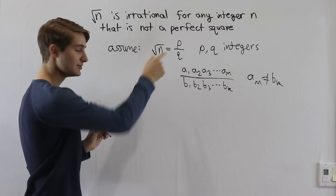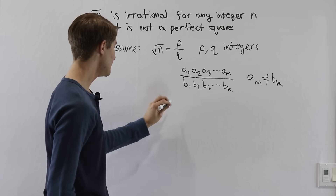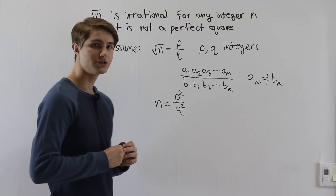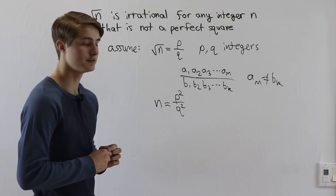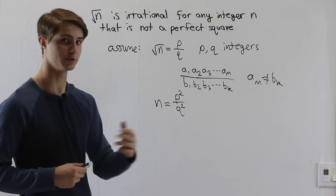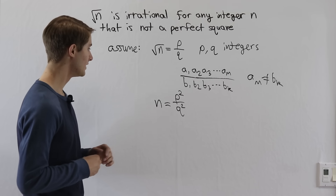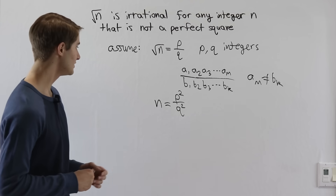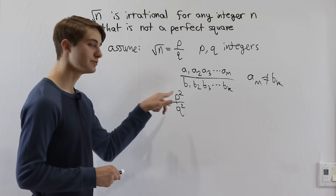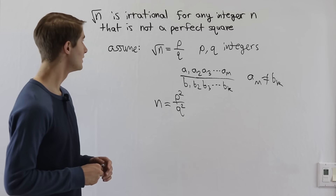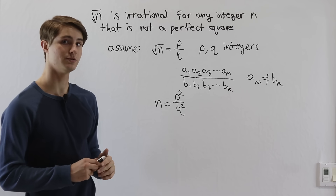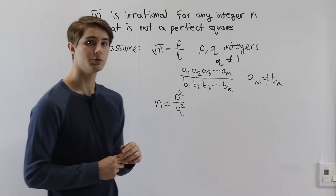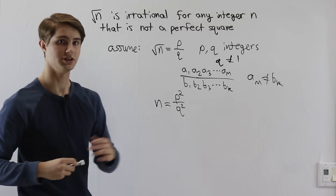Now what we're going to do is take this square root statement and square both sides. That means that n is equal to p squared over q squared. We also have to think about what are the properties of q. What would happen if q were equal to 1? Well, if q equals 1, then we would have n equals p squared, where p is an integer, but that would make n a perfect square. For example, if p were 3, then we would have n equals 3 squared, which is 9, and 9 is a perfect square. But we said n is not a perfect square, which means that q cannot be equal to 1. And as long as q is not equal to 1, we know n is not a perfect square, so the conditions are satisfied.